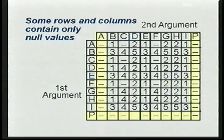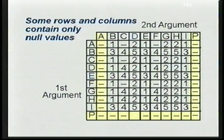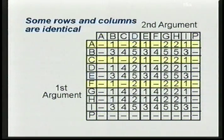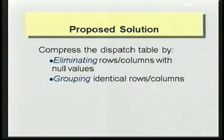The solution we propose is based on the following observation. If we go back to the dispatch table, we see that certain rows and columns, like P, only contain null values — meaning there is no applicable method when such a type appears at that argument position. Moreover, there are certain rows and columns that are identical, like rows A, C and F. So we propose to compress the dispatch table by eliminating rows and columns that only contain null values and grouping rows and columns that contain identical values.